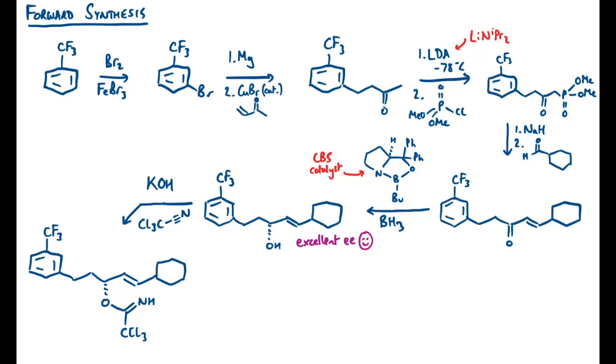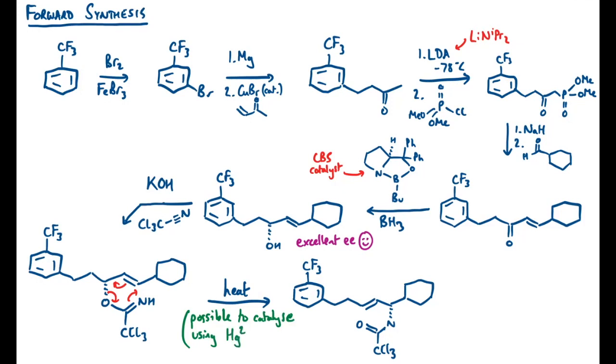Now I need to do the Overman rearrangement next, and because it's a 3,3 sigmatropic rearrangement, I should be able to get away with this with just heating. Just as a reminder, the curly arrows look like this. I'll just note in passing that it's possible to catalyze this reaction using some heavy metals, so e.g. mercury 2+ or palladium 2+ complexes. Presumably what that sort of thing does would be to act as a Lewis acid on that pi system, just to lower the activation energy for the process. And to finish off the synthesis, all I need to do is hydrolyze the amide, and let's just use potassium hydroxide again. And that's my product, hopefully in high yield, high enantioselectivity, with a collection of operationally easy to use reactions.